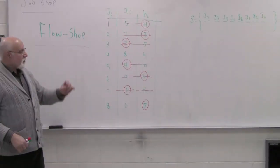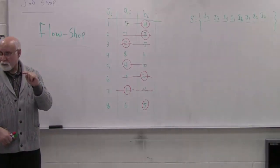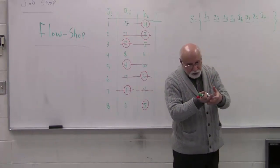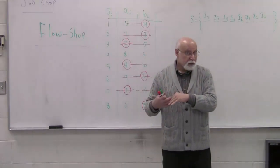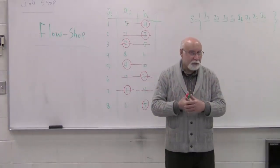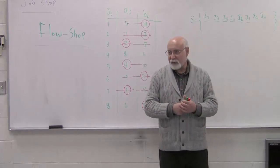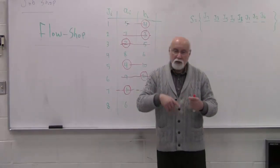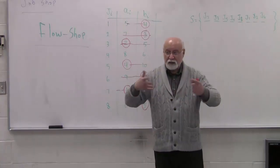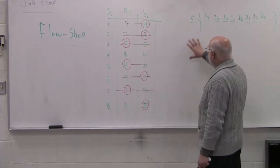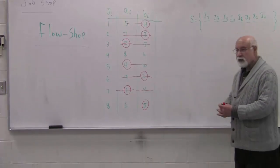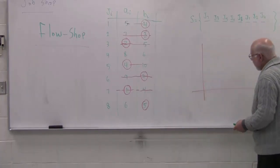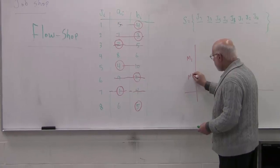That sequence says to send these jobs in the same order on the machine. Send job 7 to machine 1; when it finishes, take it to machine 2. You cannot start both of them at the same time — these were the basic requirements introduced last time. No job can be processed on two separate machines at the same time; no machine can process two different jobs at the same time. Now let's look at the Gantt chart. For the Gantt chart, again, M1 is machine 1 and M2 is machine 2, and this axis is time.